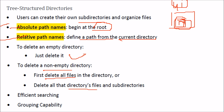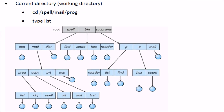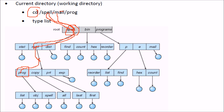To delete an empty directory, you just delete it. But if you want to delete a non-empty directory, you first delete all the files in it, then delete all subdirectories. Searching in a tree structure directory is quite efficient and grouping capability is also available. For example, starting from a current directory like 'spell', you can navigate into 'mail' and then into 'program'.